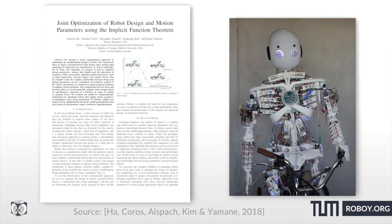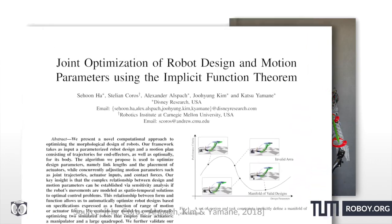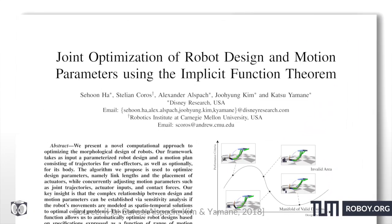In this series of fascinating papers in robotics, we stroll into the field of robot morphology today. We have a fascinating paper from the folks at Disney Research, called "Joint Optimization of Robot Design and Motion Parameters Using the Implicit Function Theorem."